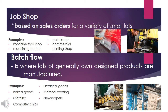Next is batch flow. This is actually a bigger operation compared to the job shop. Batch flow is where lots of general or own-designed products are manufactured. Good examples include baked goods, clothing, computer chips, electrical goods, material coating, and newspapers. Newspapers, for instance, are produced every day, meaning they are produced by batch.